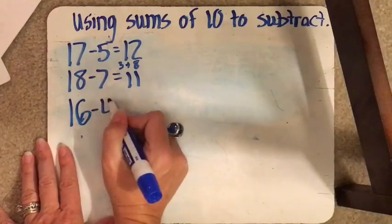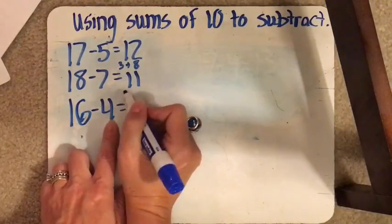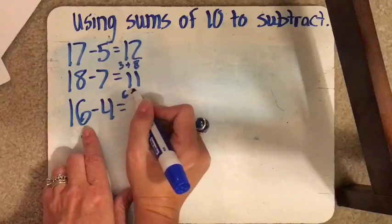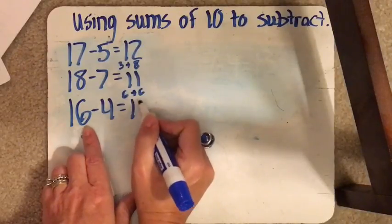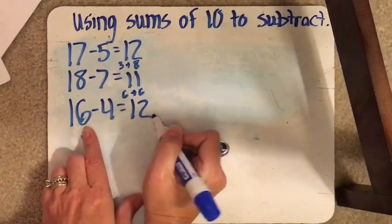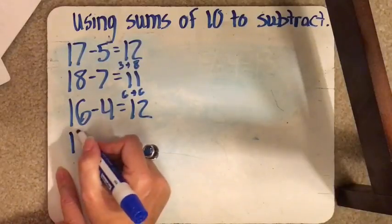Here we've got 16 minus 4. So again, 4 plus 6 is what gets us to 10. And then we've got 6 more. 6 plus 6 is 12. All right, let's do another one.